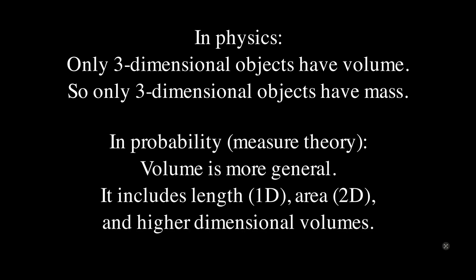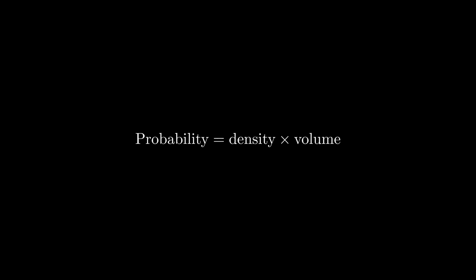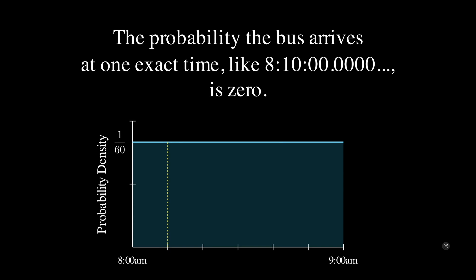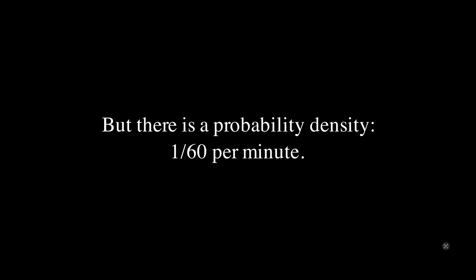In probability, and in the mathematical field of measure theory which probability is based on, volume is a little more general — it includes things like length (one-dimensional volume), area (two-dimensional volume), and even higher-dimensional volumes. Probability is equal to density times volume. Suppose bus arrival times are uniformly distributed between 8 a.m. and 9 a.m. The probability the bus arrives at any one exact time, like 8:10 on the dot down to infinitely many decimal points, is zero — there's no area, no volume, no mass, no probability. But there is a probability density: 1/60th per minute.